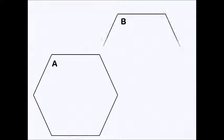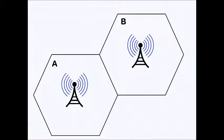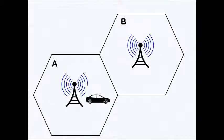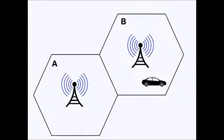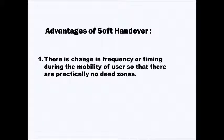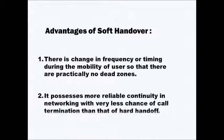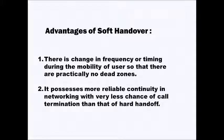Consider two cells A and B, each having antennas at the center. When the vehicle is in cell A, it is connected to the base station antenna of cell A. When the vehicle moves towards the boundary of the adjacent cells, the mobile phone maintains its connection with both cells — it establishes a link with the base station antennas of both cells. As soon as the vehicle moves into cell B, the mobile phone gets connected to the base station antenna of cell B. Soft handover is also called make-before-break. Advantages: it offers practically no dead zones, and provides more reliable continuity in networking with very little chance of call termination compared to hard handoff.